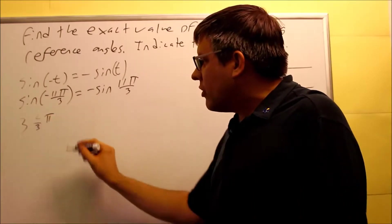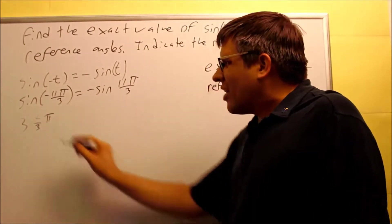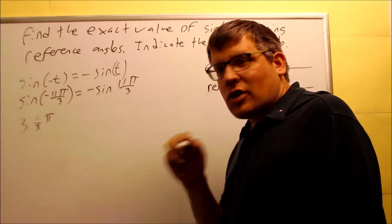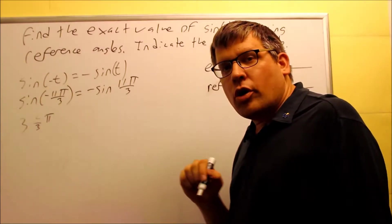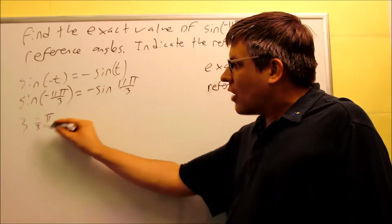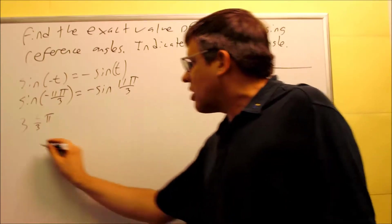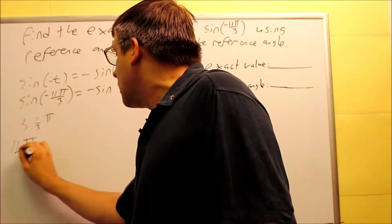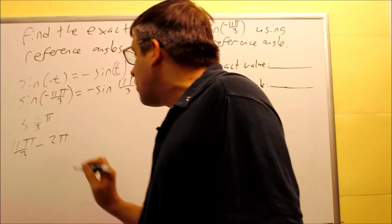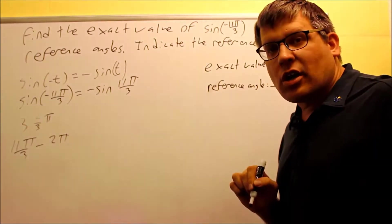So 9 plus 2 gives you 11, that's 3 and 2 thirds. Now, 3 and 2 thirds means that if I divide 2π into it, I know it'll go in only one time. So because it goes in there once, I'm going to take 11π over 3, and I'm going to subtract 2π from it.